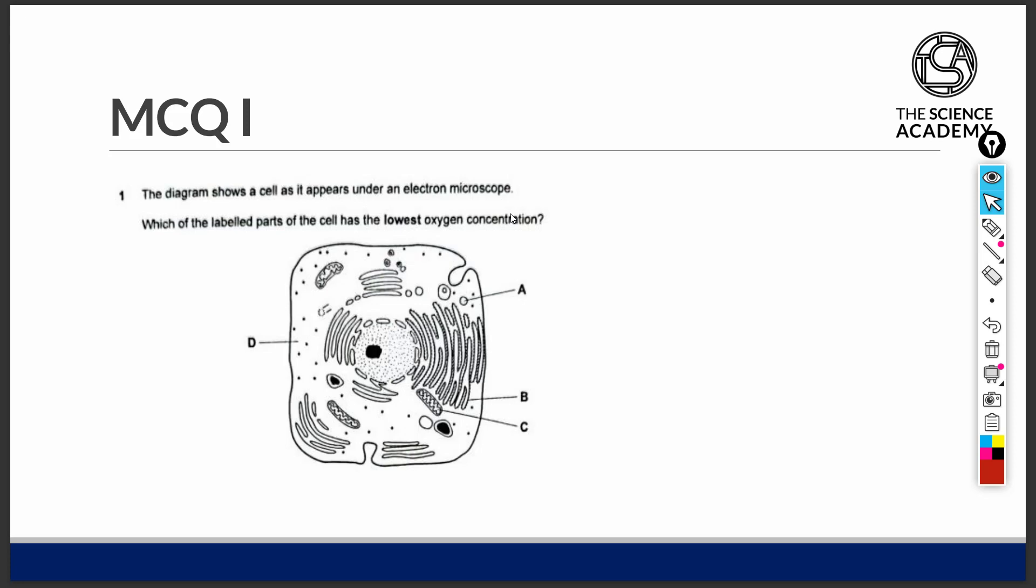Question 1. The diagram shows a cell as it appears under an electron microscope. Which of the labeled parts of the cell has the lowest oxygen concentration?